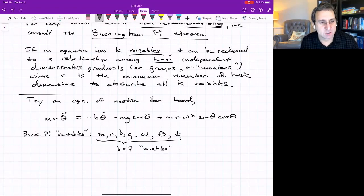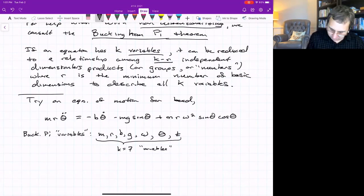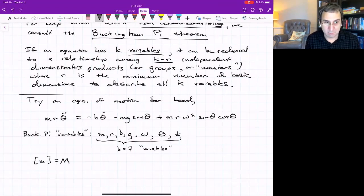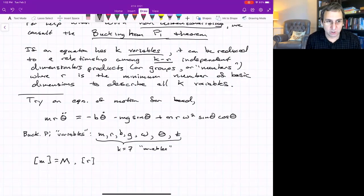According to the Buckingham pi theorem, we have k equals seven variables. Now, how many basic dimensions do we need to describe all of these? To find that out, we just sort of find out the dimensions of everything. Dimension of mass is, of course, M, mass.